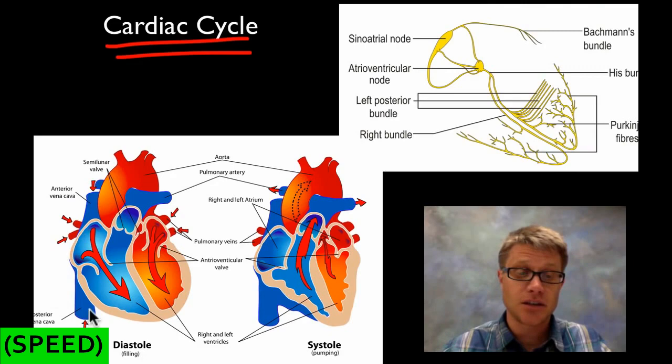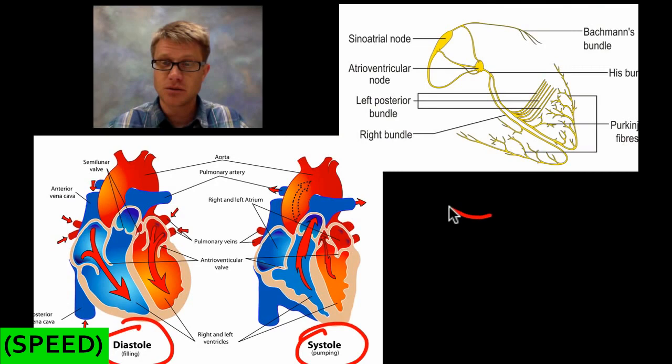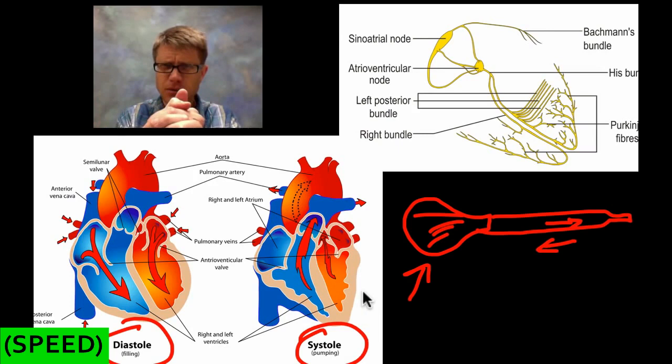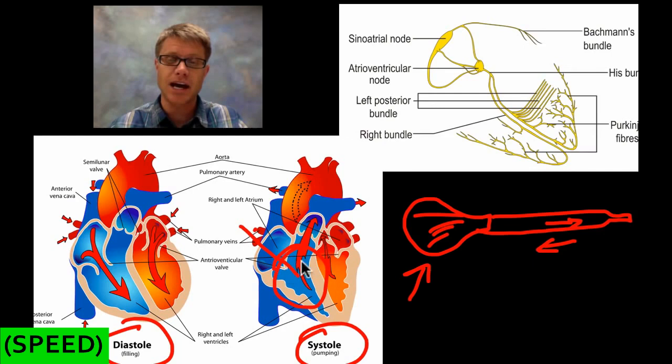Your heart goes through what's called a cardiac cycle, which has two parts: diastole, meaning filling, and systole, meaning pumping. Think of a turkey baster — squeezing the bulb is like systole, and relaxing it sucks fluid back in like diastole. The heart contracts during systole and relaxes during diastole. The atrium contracts first, pushing blood down into the relaxed ventricle; then the ventricle contracts and pumps blood out while the atrium relaxes to receive new blood.